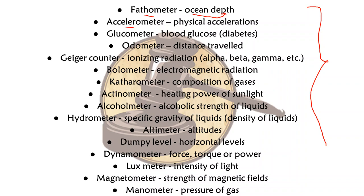Glucometer measures the glucose in blood — blood sugar. Odometer measures the distance traveled. Geiger counter — G-E-I-G-E-R — measures ionizing radiation like alpha, beta, gamma, etc. Bolometer measures electromagnetic radiation. Catharometer measures composition of gases. Actinometer measures the heating power of sunlight — if you want to measure the heating power of sunlight, you use an actinometer.